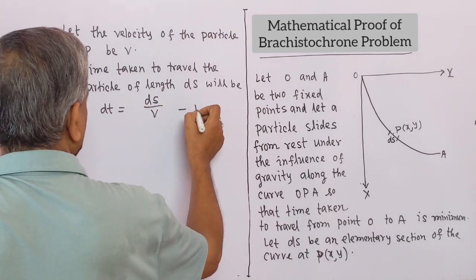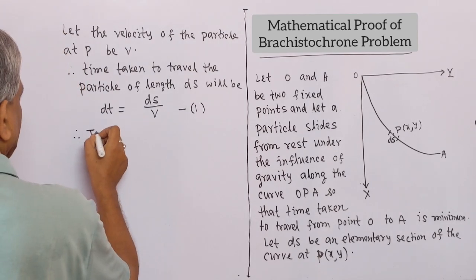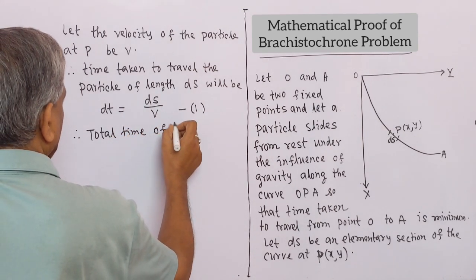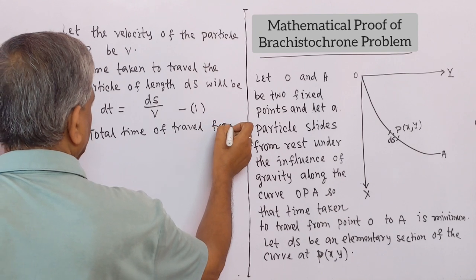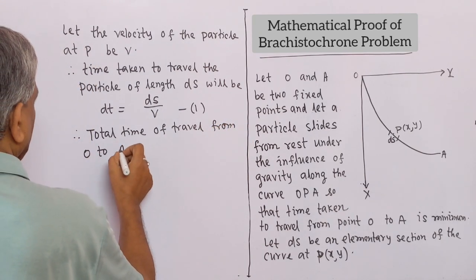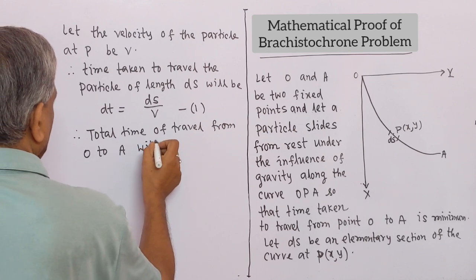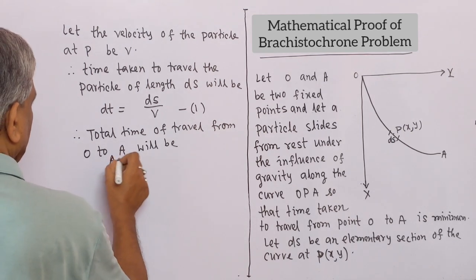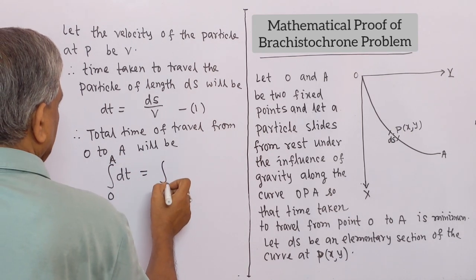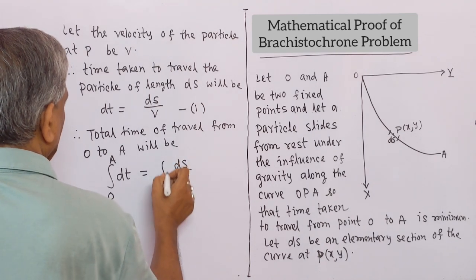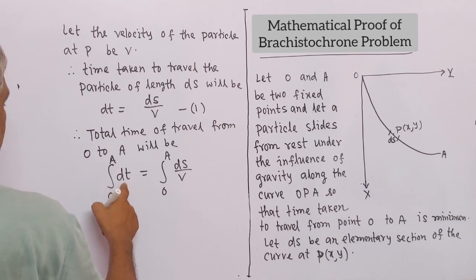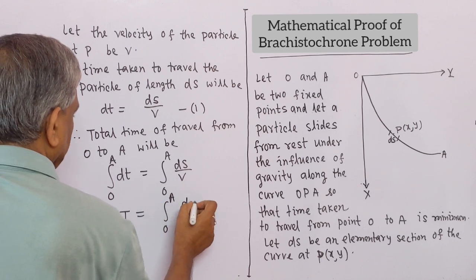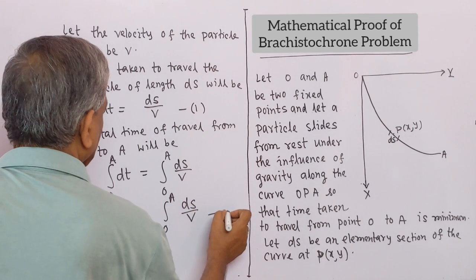Let this be equation number 1. Therefore, total time of travel from O to A will be T equal to the integration from O to A of DS divided by V. Let this be equation number 2.